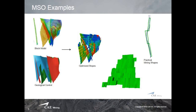In this example on the screen, you can see a block model that can have different veins in the same block model. In this case, the user designed a surface that controls the stope creation, and the result is optimized stopes respecting the foldings.